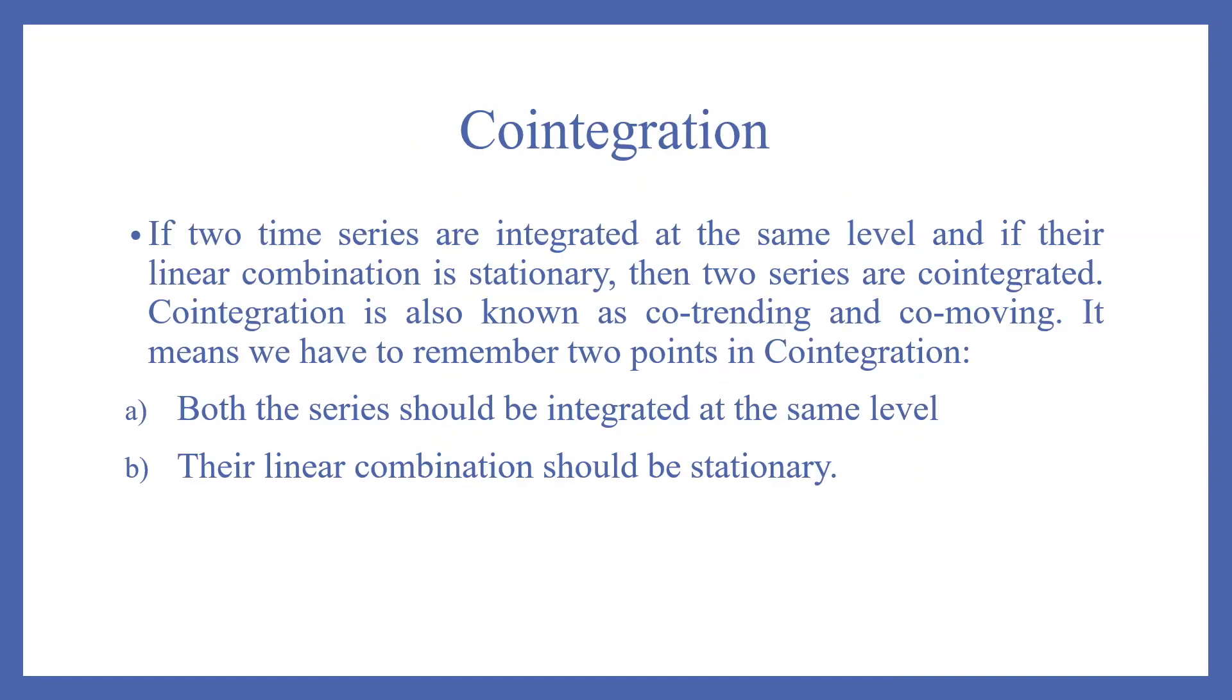Now let's take the definition of it. If two series are integrated at the same level and if the linear combination is stationary, then two series are cointegrated. Cointegration is also known as co-trending and co-moving. It means we have to remember two points in cointegration. Both the series should be integrated at the same level and the second point is the linear combination should be stationary.